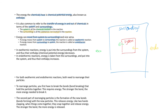In an exothermic reaction, energy is put into the surroundings from the system, and thus the enthalpy — the chemical potential energy — decreases. In the case of a battery, the battery chemicals are the system, and over time when the battery is used, it gives away electrical energy into the surroundings — the external circuit — and so it's an exothermic reaction.